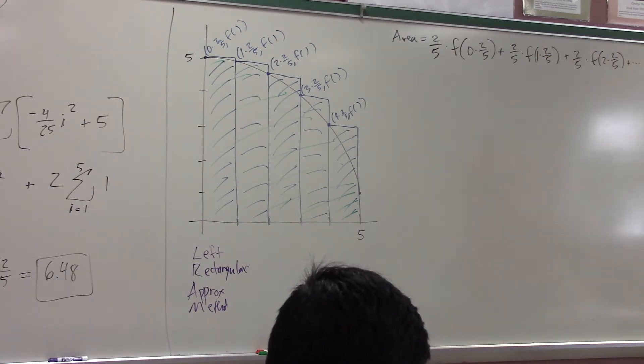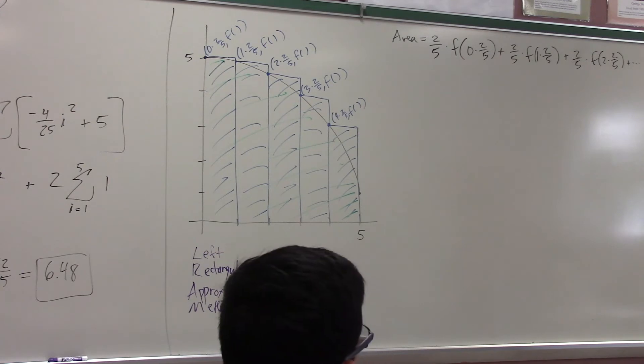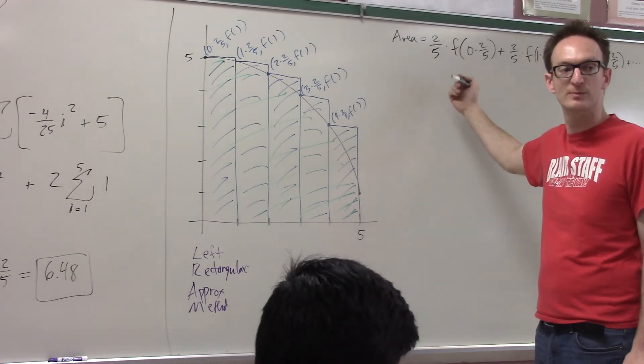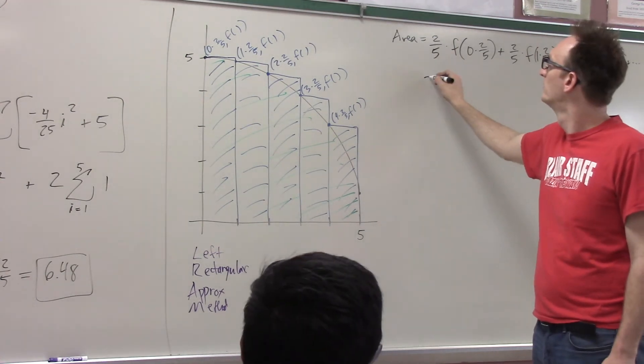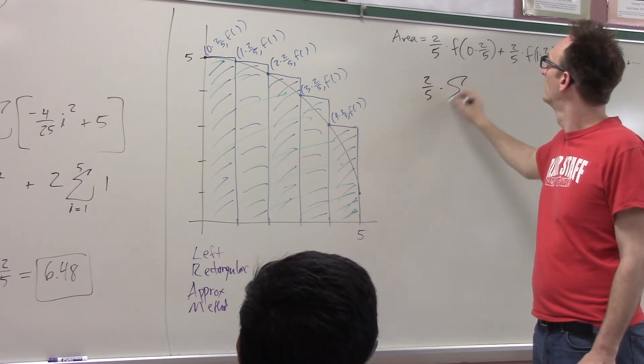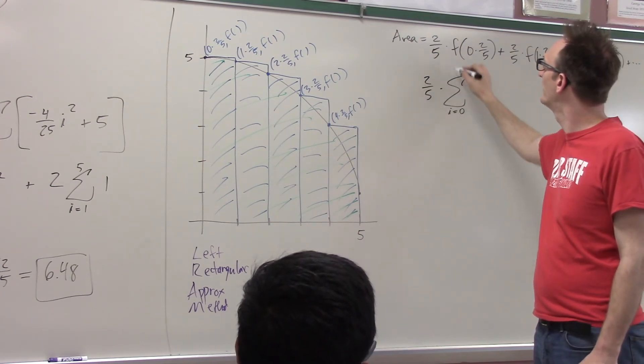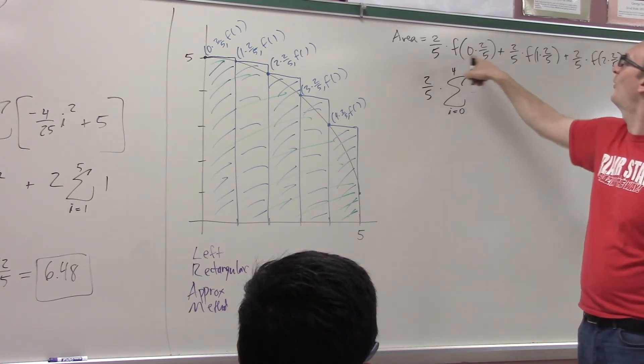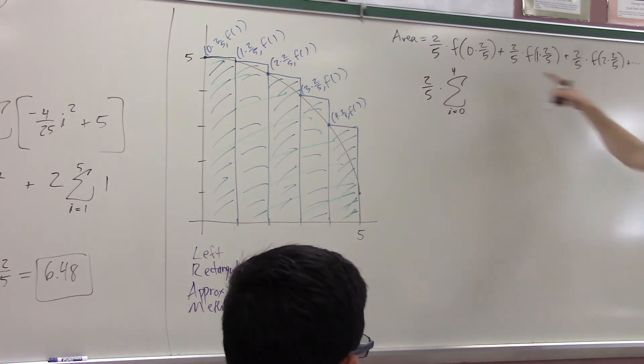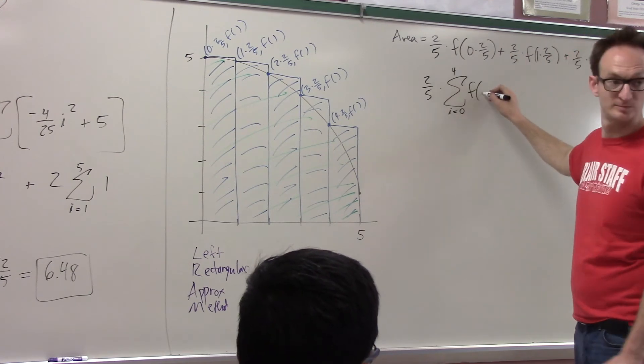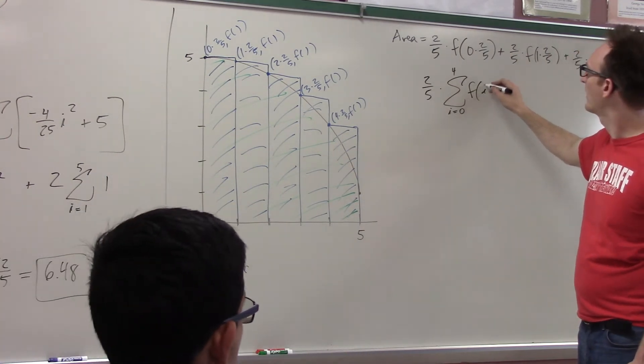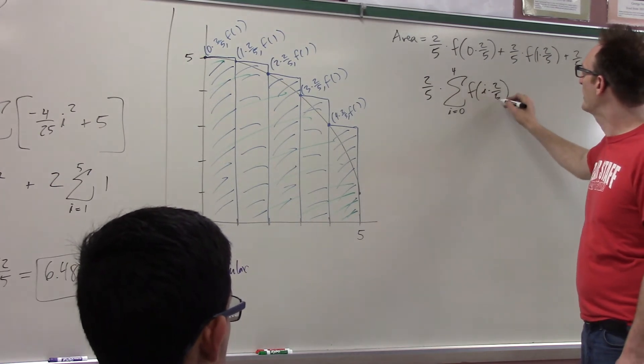So do you guys kind of feel this as an off-by-one kind of issue to index, because we're using? When I go to write this in sigma notation, I have to be advanced. How do I write this in sigma notation? Two-fifths times sigma i equals zero to four. Zero to four. Because, right? And then f of i times two-fifths.